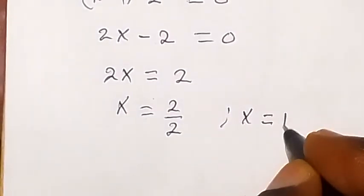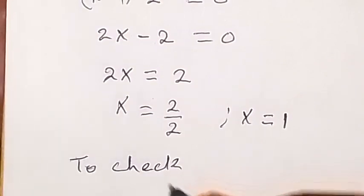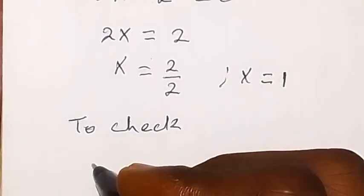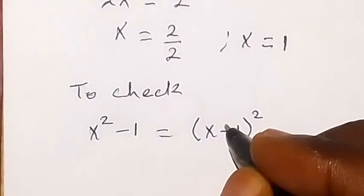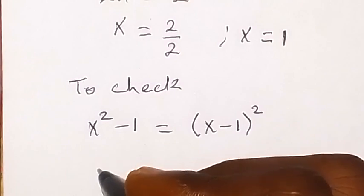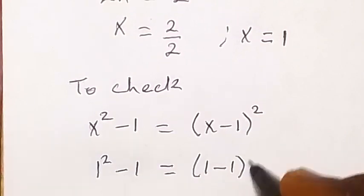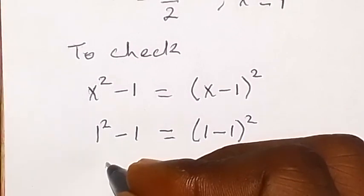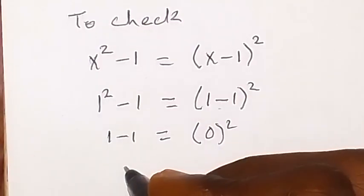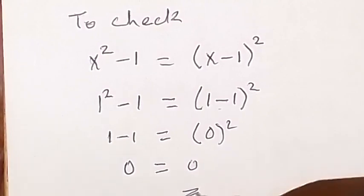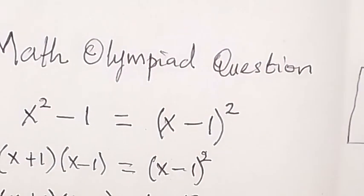Our answer is x equals one. Let's verify by substituting back into the original expression: x squared minus one equals x minus one squared. Putting in x equals one: one squared minus one equals one minus one squared. That gives one minus one equals zero squared, so zero equals zero. Correct!